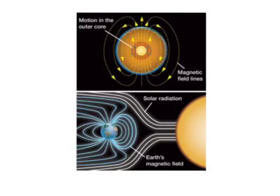The fact that S waves cannot go through liquids proves that there is liquid in the outer core instead of solid. That liquid's movement creates the magnetic field that surrounds our Earth, which protects us from solar radiation.